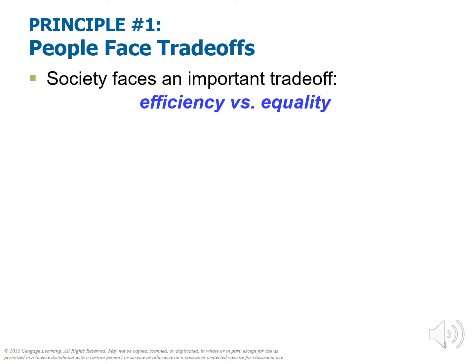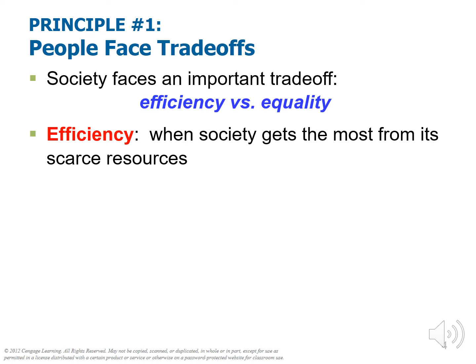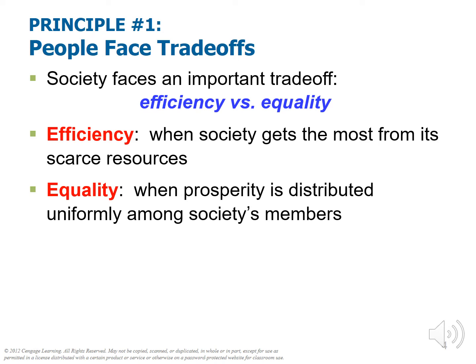You might also think about your own time and how to use it efficiently. Equality is when prosperity is distributed uniformly among society's members — a tendency towards everyone getting the same basic salary and basic standard of living. Another way to think about it: if we took the exam scores in this class and divided the total points earned evenly among everyone, maybe you'd all get B's or C's. It wouldn't matter how you individually performed, only how the class performed and how that was distributed. That's thinking in terms of equality.